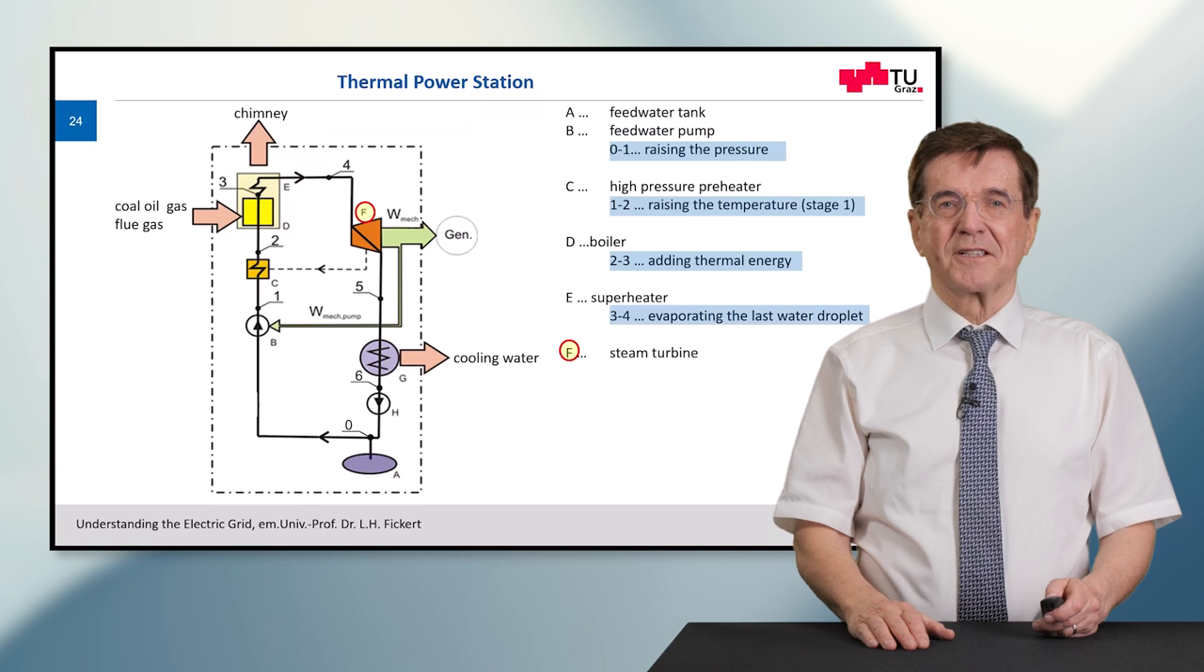The steam turbine converts the thermal energy, the high pressure, high temperature energy of the steam, into mechanical energy and then into electrical energy, and this drives the generator.